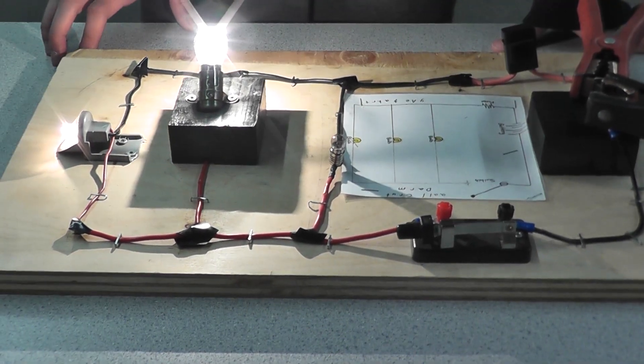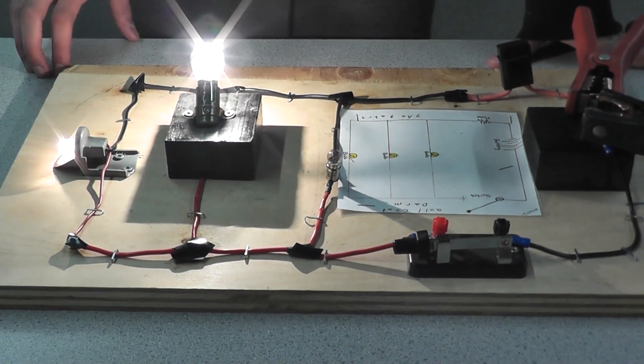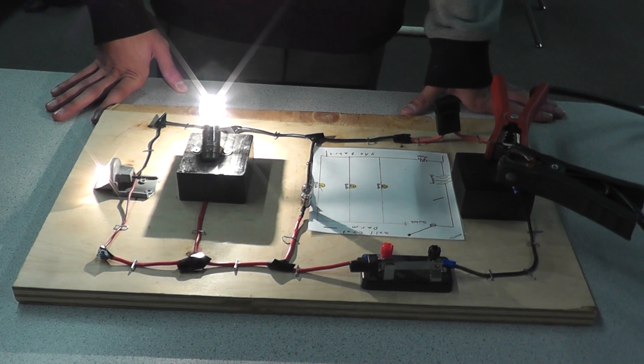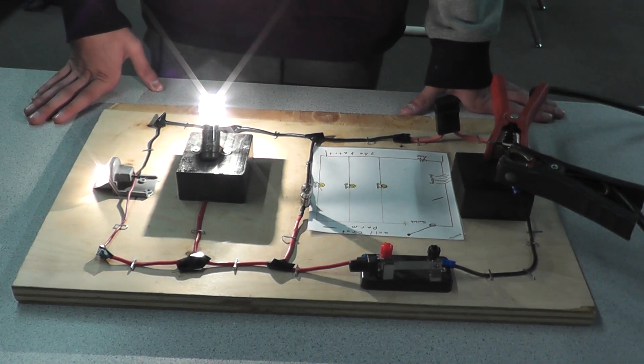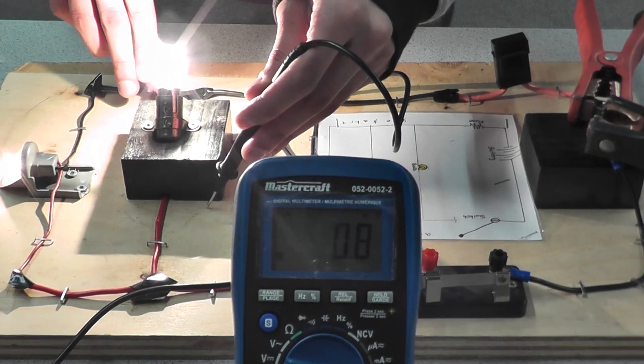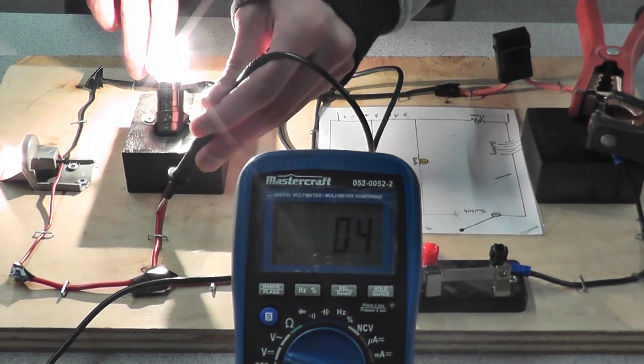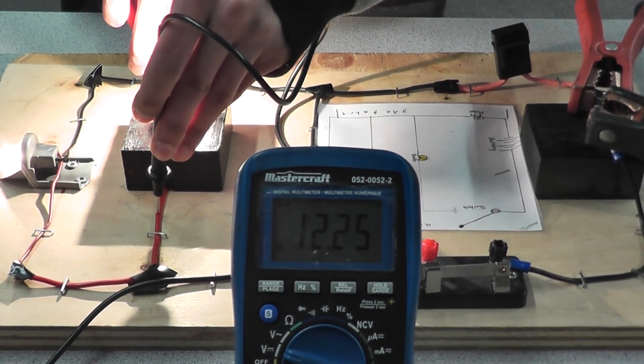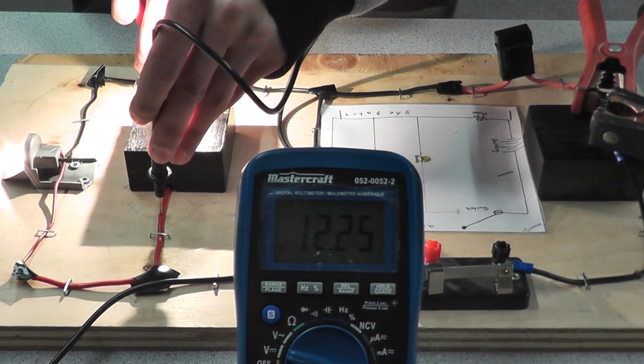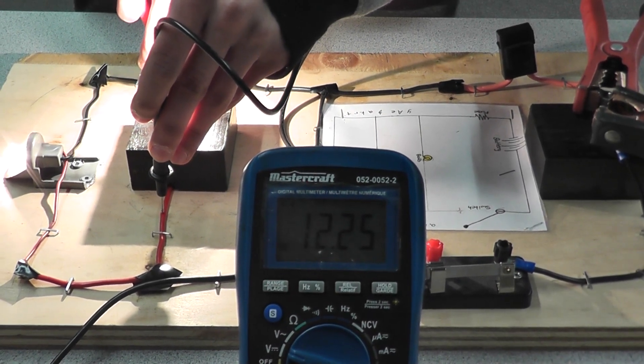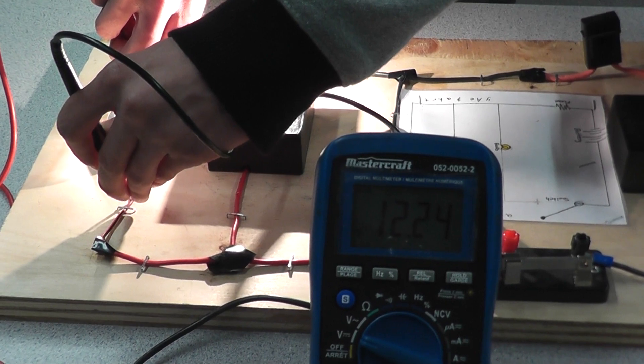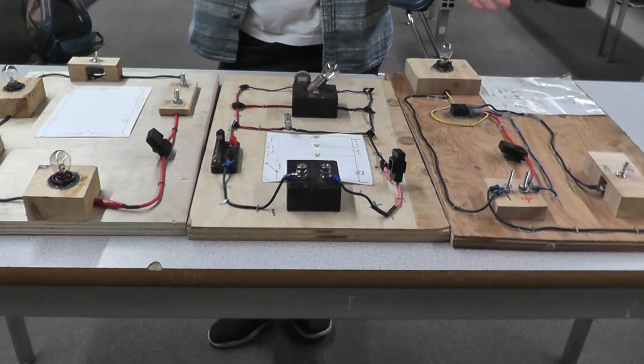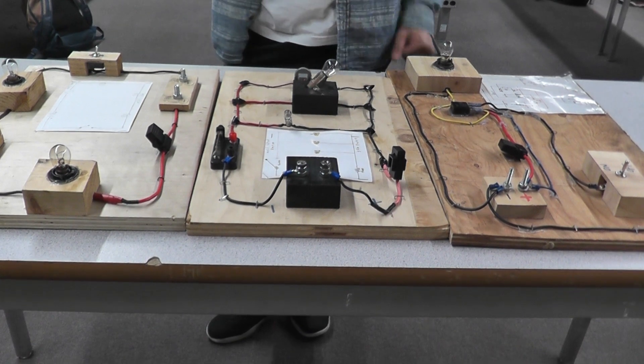In a parallel circuit, the voltage stays the same among each of the pathways. Since the source has 12 volts, each pathway will be getting around 12 volts. As you can see, the voltmeter shows 12 voltage in that one pathway. And as you can see, the same goes for the last pathway. That has been the video for the electrical circuits.